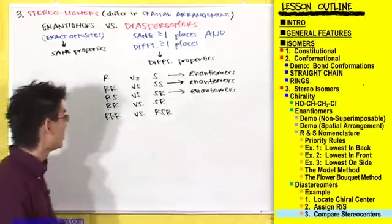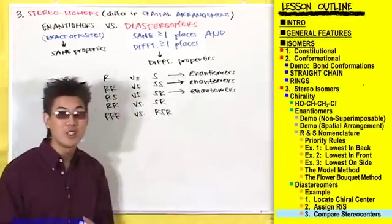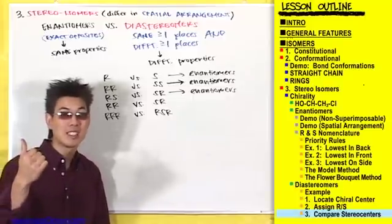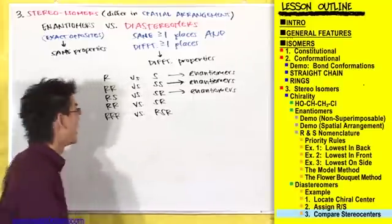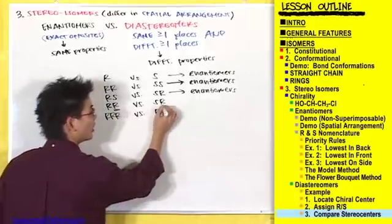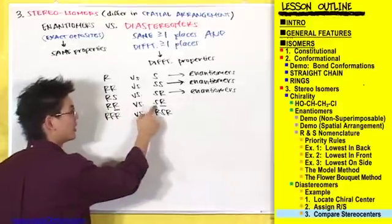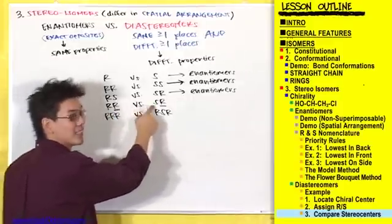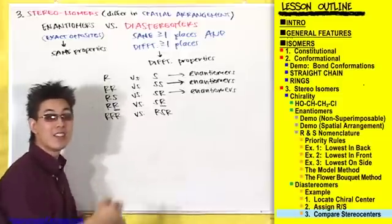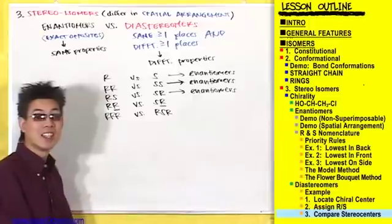Now let's look at RR versus SR. Finally we see two compounds that are the same at one place and different at another. At this stereocenter both compounds are R, but at this other stereocenter this compound is R whereas this one is S. They're the same at one stereocenter and different at another, making these diastereomers.